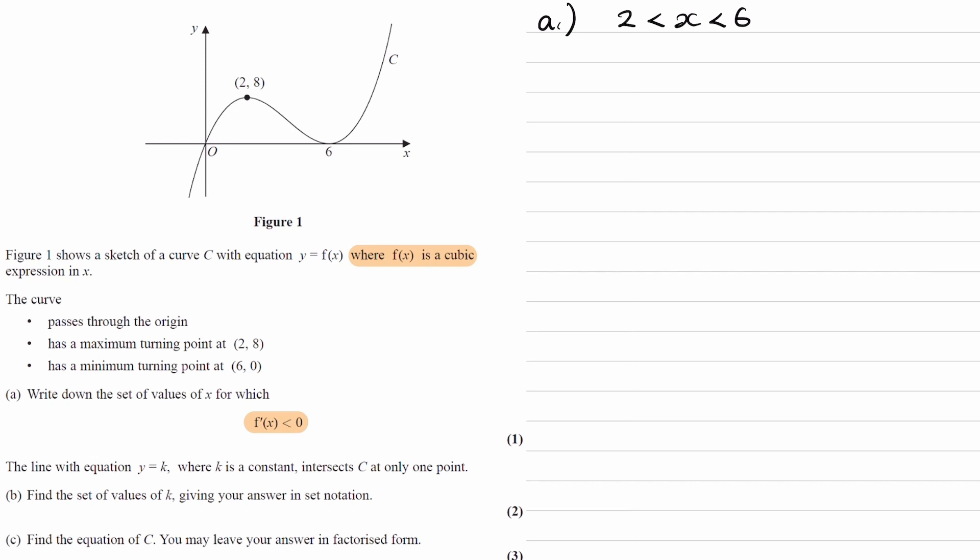And for part B, we're told the line with the equation y is equal to k, where k is a constant, intersects the curve at only one point. We're trying to find the set of values of k, giving our answer in set notation.